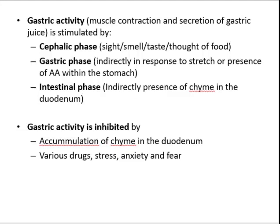Gastric activity — motility contraction and secretion of gastric juice — is stimulated by three phases. First is the cephalic phase, stimulated by the sight, smell, taste, or thought of food. The sight or thought of food stimulates the cerebral cortex, which stimulates the hypothalamus. The hypothalamus then initiates a parasympathetic signal to the stomach via the vagus nerve, commencing gastric activities and causing the stomach to release the hormone gastrin. Second is the gastric phase, in response to stretch or the presence of amino acids within the stomach. Both activate short and long vago-vagal reflexes that stimulate gastric activity and gastrin release, and this is responsible for the greatest volume of gastric juice secretion.